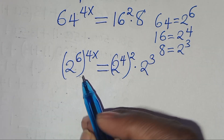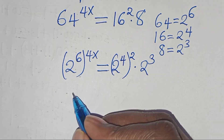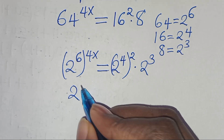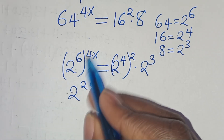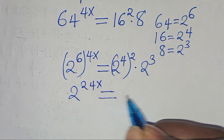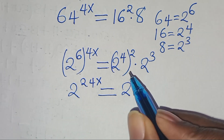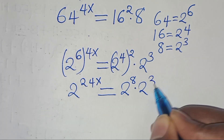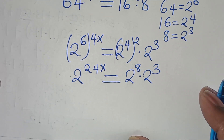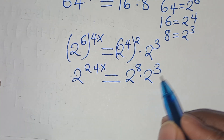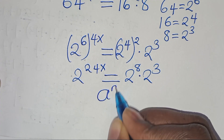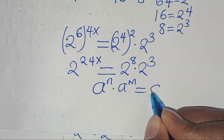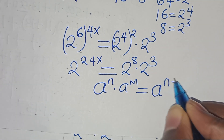So here we have 2 to the power of 6 times 4x, this is the same as 2 to the power of 24x, this is equal to 2 to the power of 4 times 2 — which is 8 — then times 2 to the power of 3. Now, 2 to the power of 8 times 2 to the power of 3 is in the form of a to the power of n times a to the power of m, which can be expressed as a to the power of n plus m.